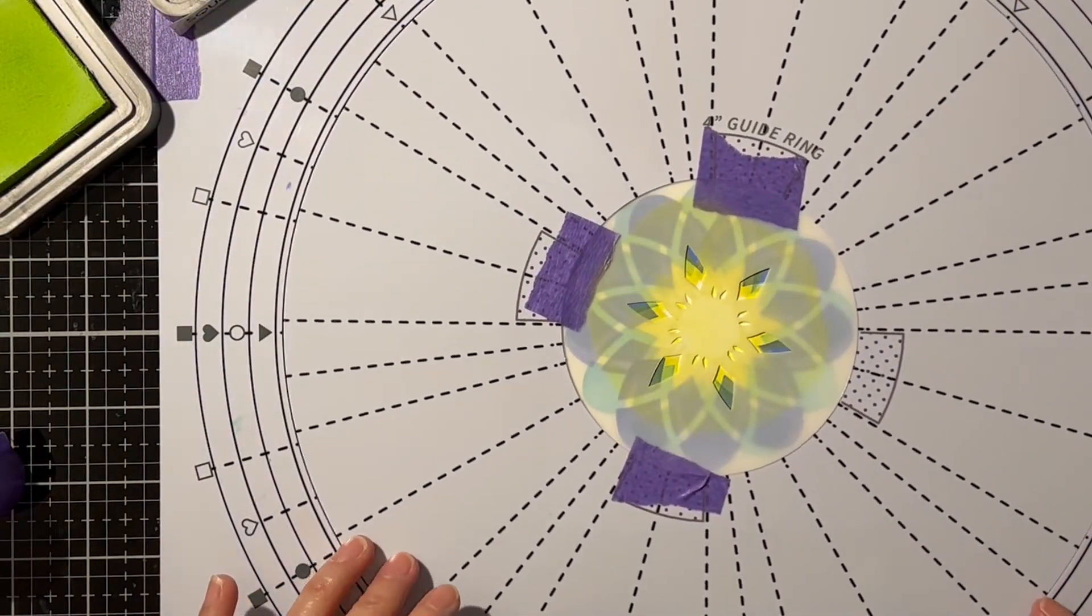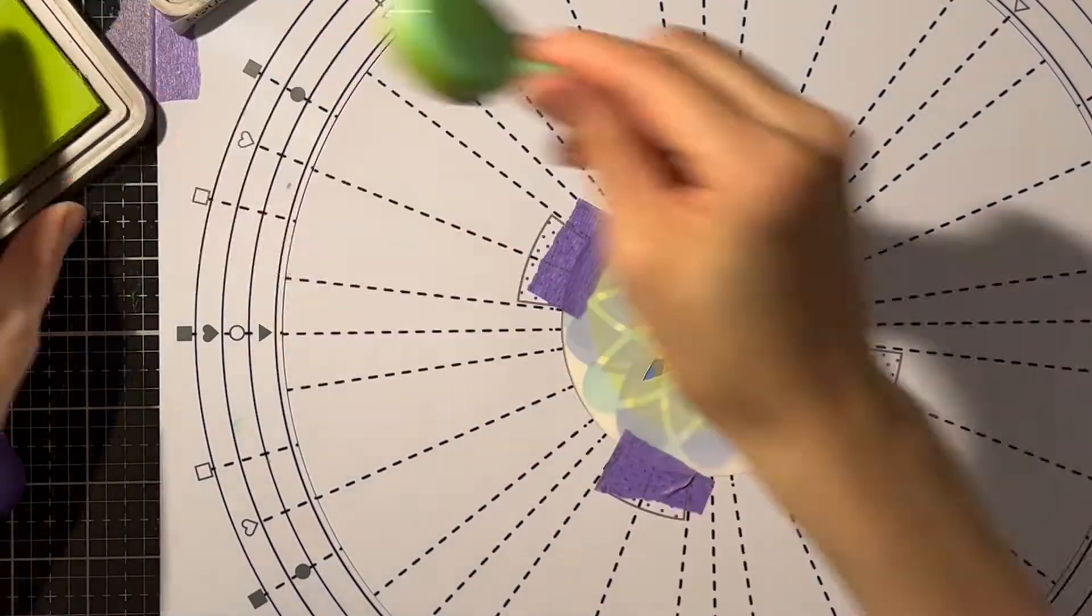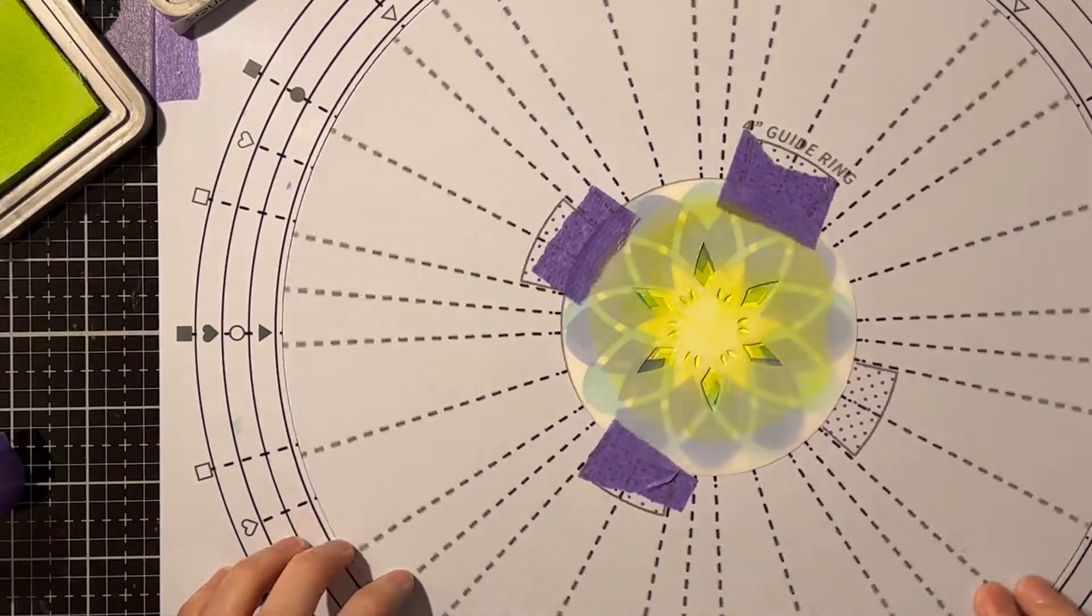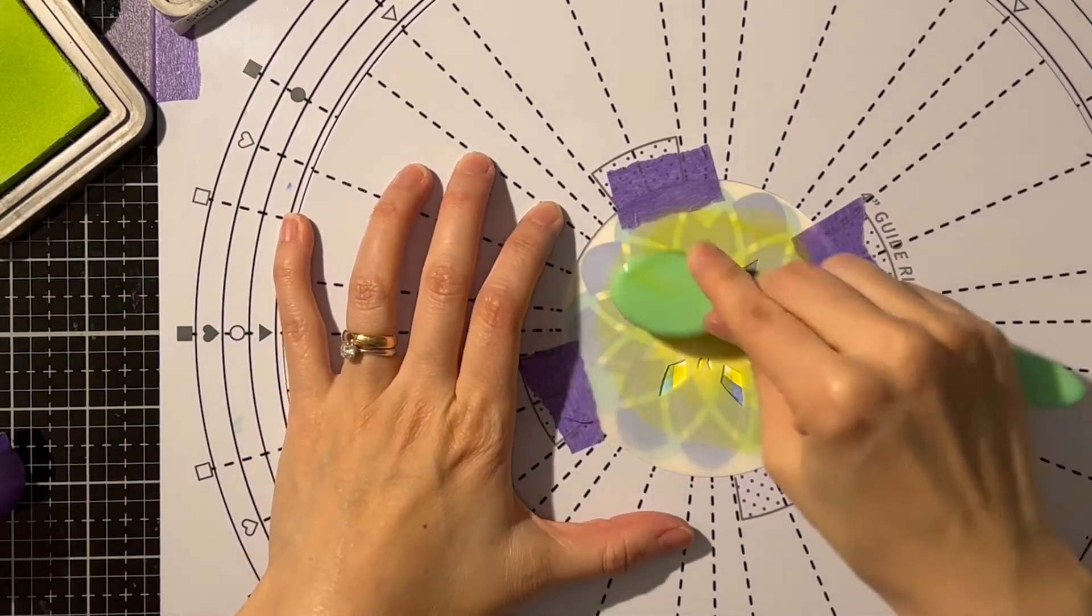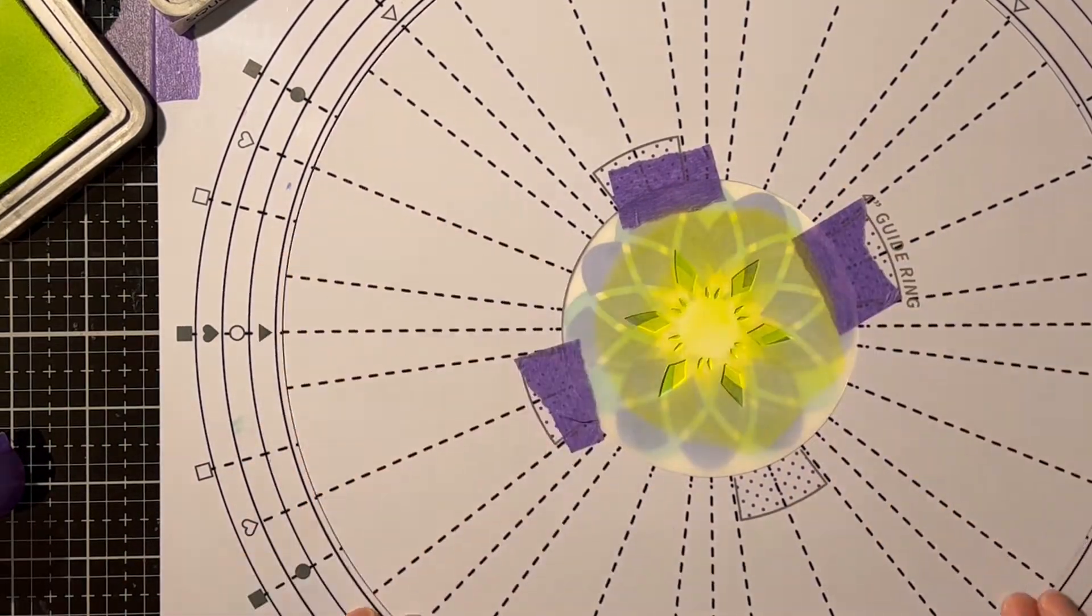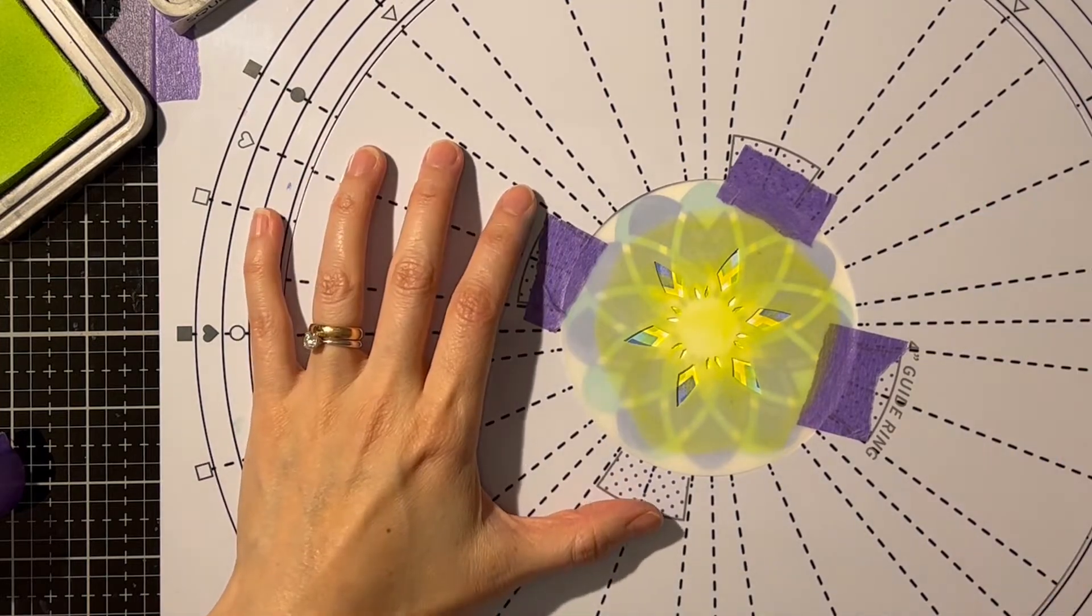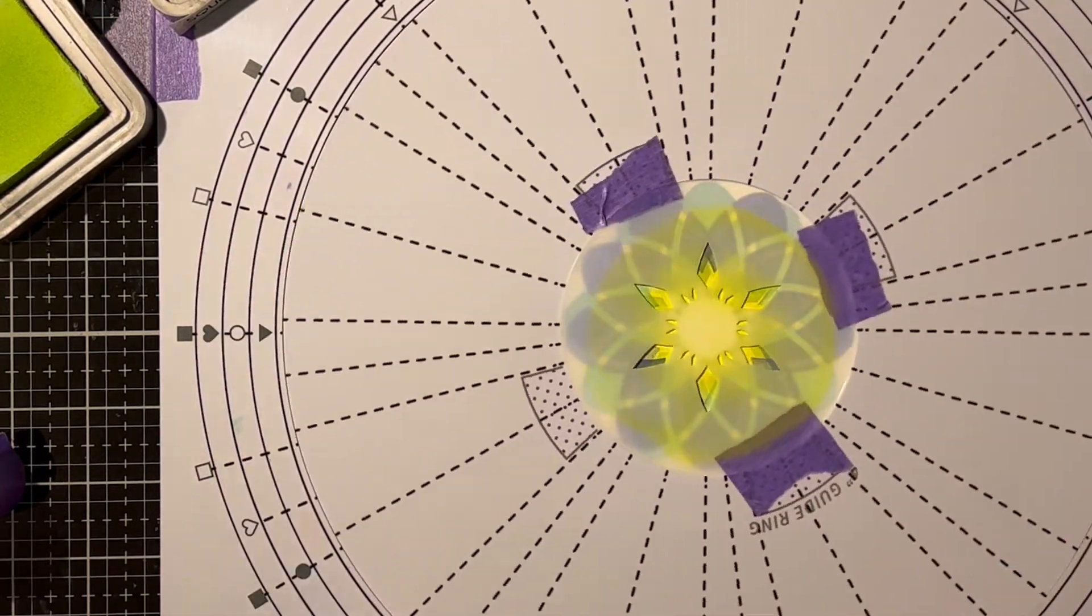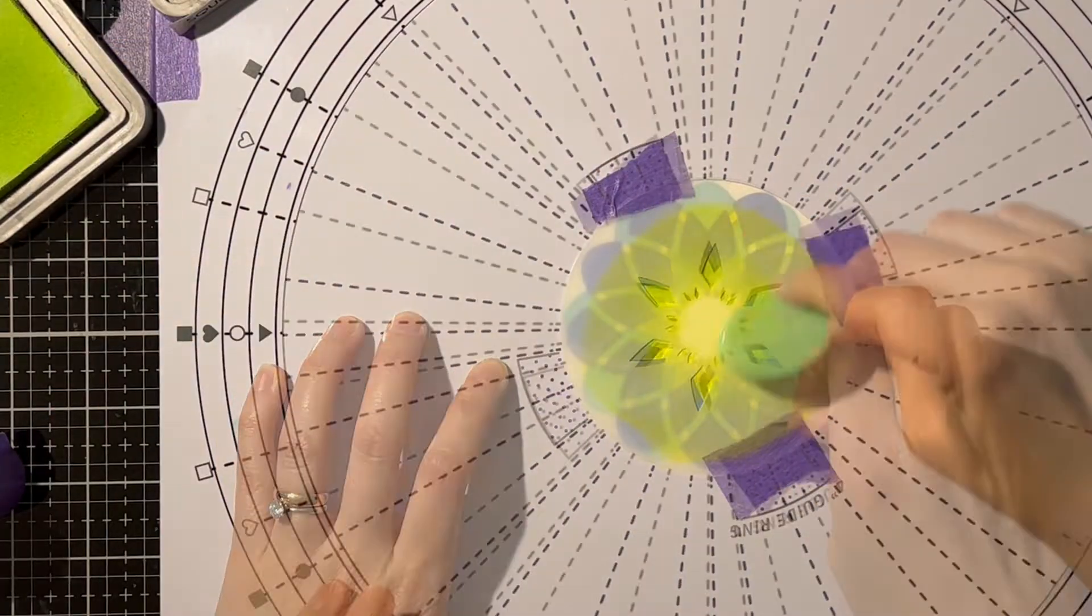I apologize that I'm zoomed in here and you're not able to see where the arrow on the guide ring is pointing to. I'm actually using a 22 and a half degree turning interval, jumping from heart to heart, and I'm alternating between distressed oxide squeezed lemonade, while stopping at all the solid hearts, and twisted citron on all the outlined hearts.